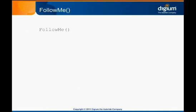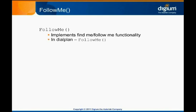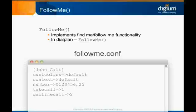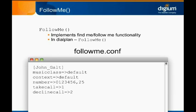The Follow Me application implements Find Me, Follow Me functionality. In our increasingly connected world, many people find it valuable to have a single contact number that can reach them on several different devices. This feature can be implemented in raw dial plan, but the Follow Me application lets you define forwarding numbers more easily and concisely via the use of followme.conf. You can set up section headings for each person who will use the Follow Me system, and then define extensions to try when the Follow Me application is called with their Follow Me ID. Each listed extension will be attempted in the specified order.